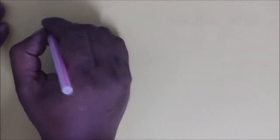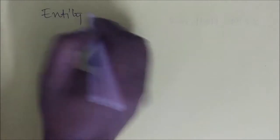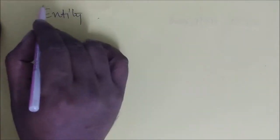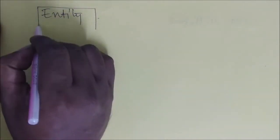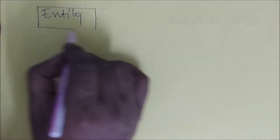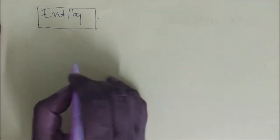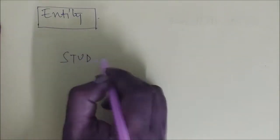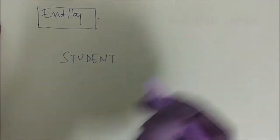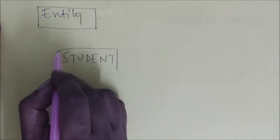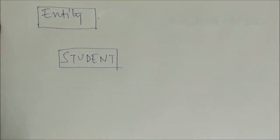In ER Diagram, we represent the relation between entities pictorially. How we represent an entity in ER Diagram? We represent an entity in square rectangular boxes. For example, student — the student entity should be in a rectangular box in the ER Diagram.